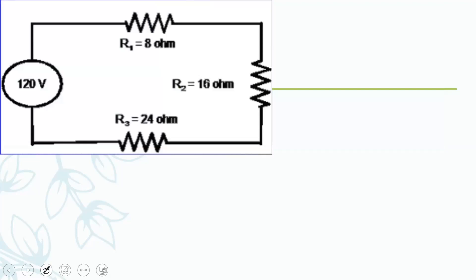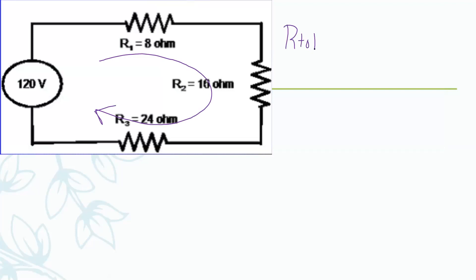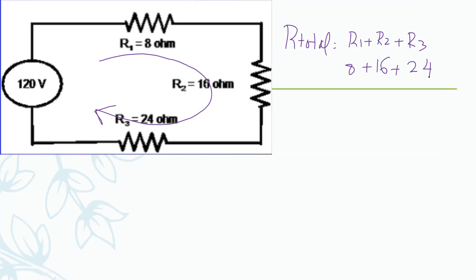Here is another example with three resistances connected in series — we know it is series because there is one path for current. To find R total: R1 plus R2 plus R3. That is eight ohms plus sixteen ohms plus twenty-four ohms. Eight plus sixteen is twenty-four, plus twenty-four is forty-eight ohms.